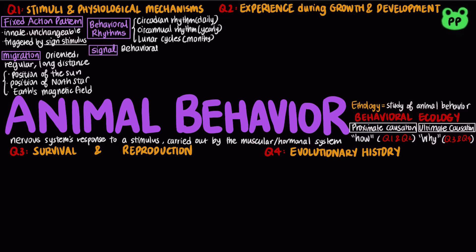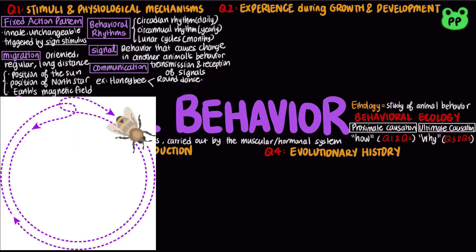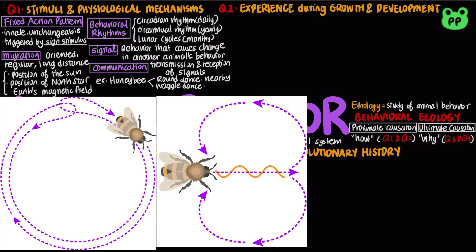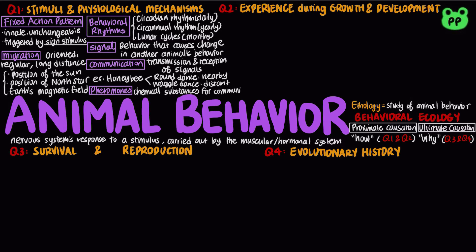In behavioral ecology, a signal is a behavior that causes a change in another animal's behavior. Communication is the transmission and reception of signals. Animals communicate using visual, chemical, tactile, and auditory signals. Honeybees show complex communication with symbolic language — they round dance to indicate food nearby, and they waggle dance to indicate a distant food source. Many animals that communicate through odors emit chemical substances called pheromones, which are effective at low concentration.